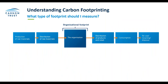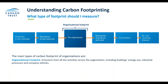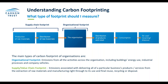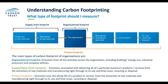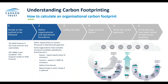There are a few types of footprints an organisation can measure. The most common is the organisational footprint — emissions from all activities across the organisation, including building energy use, industrial processes and company vehicles. The supply chain footprint looks at delivering a business's products from extraction of raw materials through to final reuse, recycling, disposal and waste management. There is also a product carbon footprint, which looks specifically at a specific product or service. For most SMEs listening today, the most relevant is the organisational footprint, covering building energy usage, company vehicles and industrial processes.